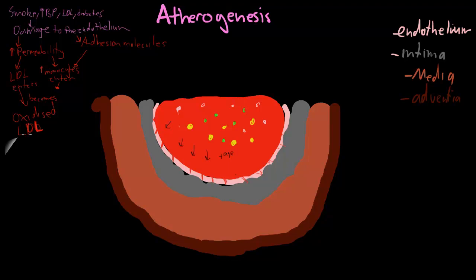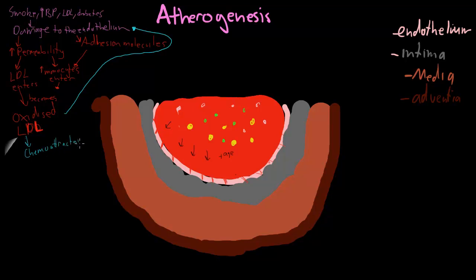This oxidized LDL is really bad. Some of the things it does: it actually causes more damage to the endothelium, and it is also a chemoattractant — it attracts monocytes and keeps macrophages, which are what monocytes turn into when they get in here.